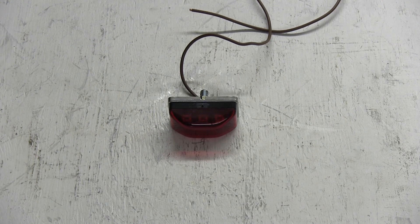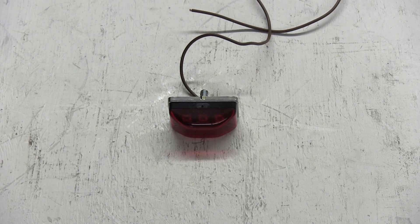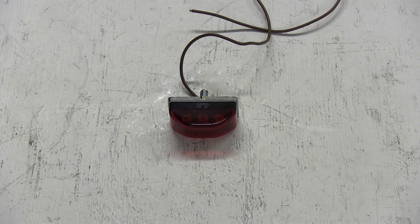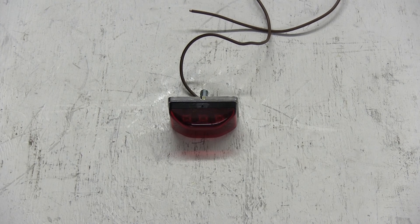And that does it for Optronics Sealed Mini Rectangular LED Trailer Clearance Light, part number MCL95RB.